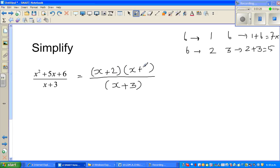So the factors would be plus two, plus three. Just like that. And then you can cancel this x plus three and x plus three. So what remains is x plus two.